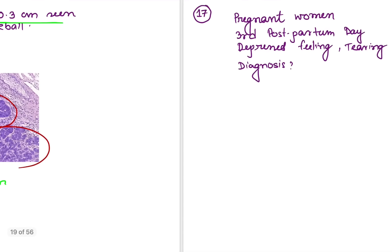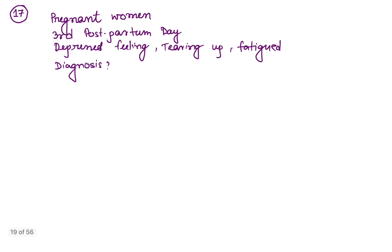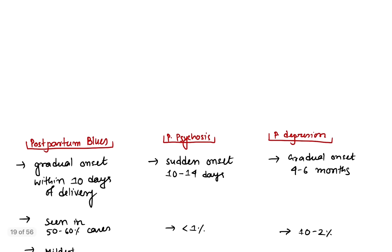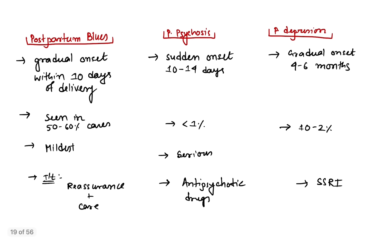Coming to question number 17: a pregnant woman on the third day of the postpartum period is feeling depressed, tearing up, and fatigued. This is a typical, straightforward question — a classical presentation of postpartum blues. There are three types of psychotic changes following delivery: postpartum blues, postpartum psychosis, and postpartum depression. Postpartum blues is usually gradual onset within 10 days.